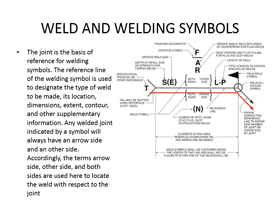The joint is the basis of reference for welding symbols. The reference line is used to designate the type of weld to be made, its location, dimensions, extent, contour, and other supplementary information. Any welded joint indicated by a symbol will always have an arrow side and an other side. The terms arrow side, other side, and both sides are used to locate the weld with respect to the joint. The red line shown here is the reference line and the arrow — we're going to work through this piece by piece.